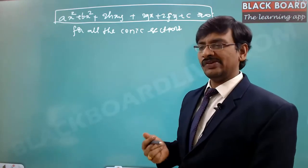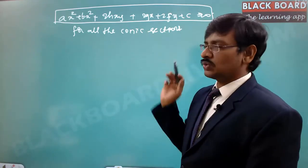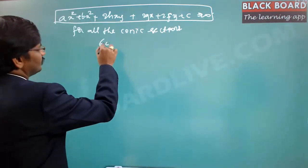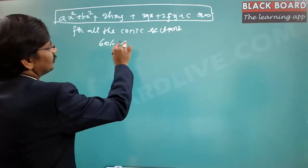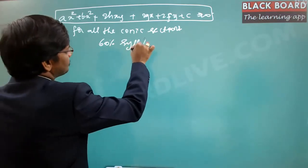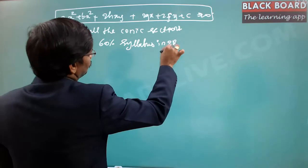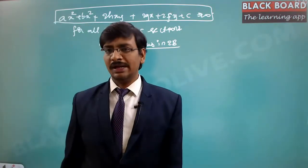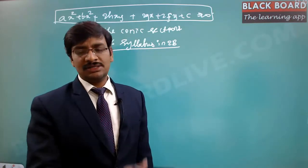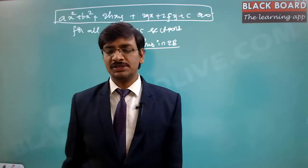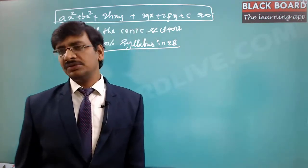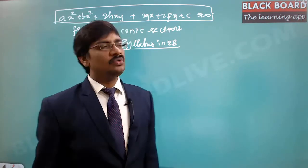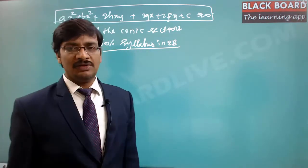We will be studying these one by one. The study of conic sections forms more than 60% of the syllabus in 2B — that is, secondary B mathematics. Out of the entire syllabus, 60% is specific to conic sections and the remaining 40% is calculus. These are the only two topics in the entire 2B mathematics.